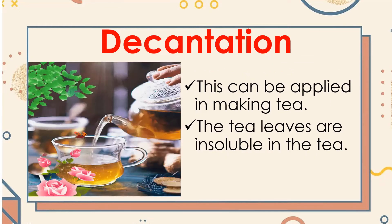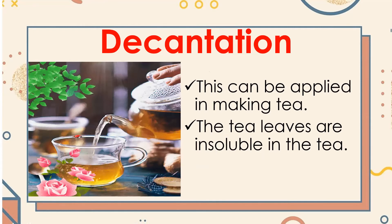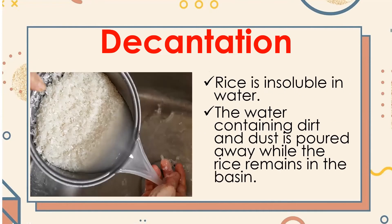So the solid settles, and then the liquid is poured away. An everyday example of this is using dry leaves and water — the solid settles and the liquid is decanted off.